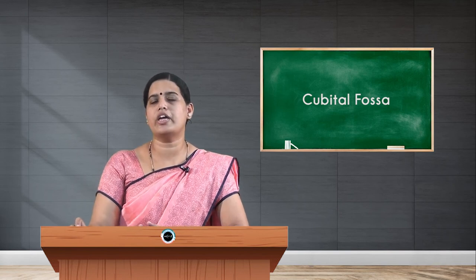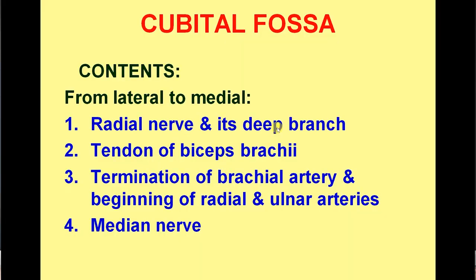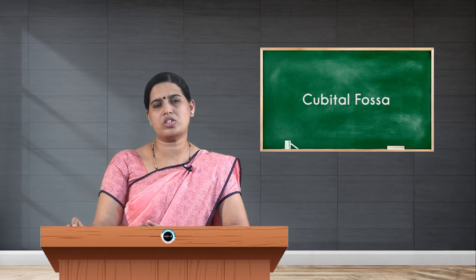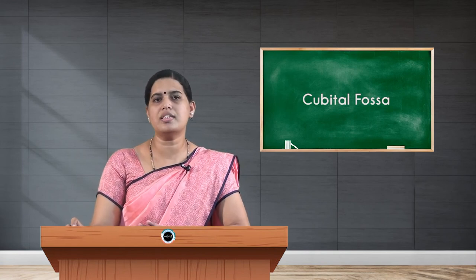Coming to the contents of the cubital fossa, naming from lateral to medial: the first content is the radial nerve, dividing into its superficial and deep branches. Next is the tendon of biceps brachii coming for insertion. Medial to that is the brachial artery with its two terminal branches — radial and ulnar artery. The medial-most structure in the cubital fossa is the median nerve.